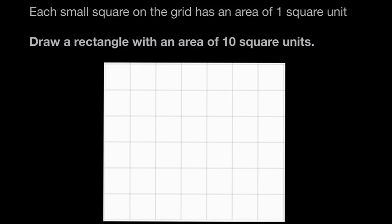Each small square on the grid has an area of one square unit. So each of these small squares is one square unit. This square is one square unit, and this square is one square unit, and so on.